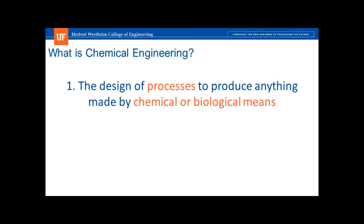The key word that always comes to my mind when thinking about chemical engineering is process. The core competency of chemical engineers is the ability to design a process with the end goal of making something by chemical or biological means, typically but not always in large quantities. Here, a process means a series of steps or actions to transform raw materials into a finished product, similar to how a computer engineer thinks about an algorithm.